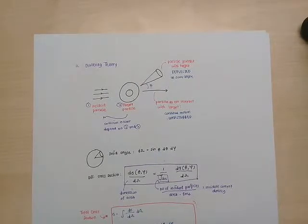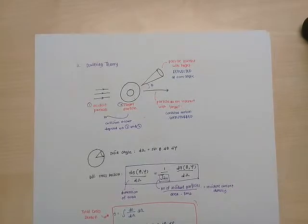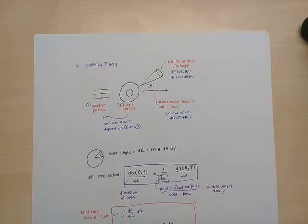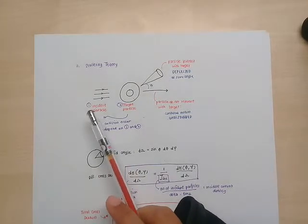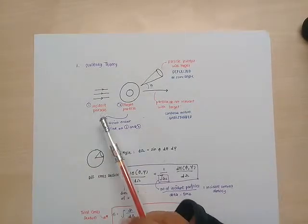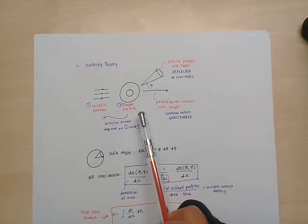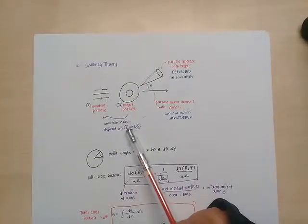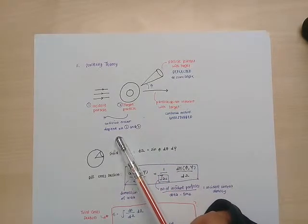We learn about atoms and particles in the micro-physical world. Basically, the experiment is done where the incident particle collides with the target particle. When these collisions occur, the collision rate depends on the number of incident particles and target particles.